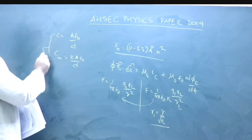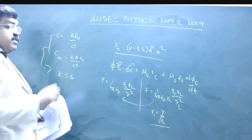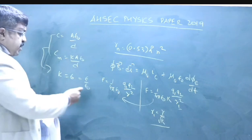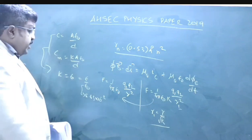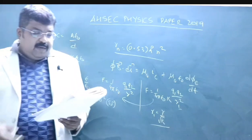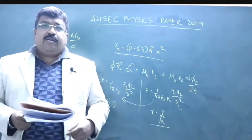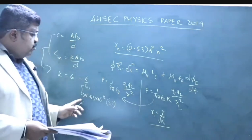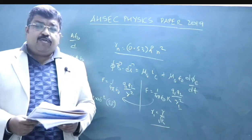Capacitance in free space is epsilon naught A by d, and in medium it is k epsilon naught A by d. If I divide these two quantities I get the value of k to be equal to 6. k is epsilon by epsilon naught, so epsilon is 8.85 times 10 power minus 12 times 6. From that you can get the value of epsilon, and this value comes out to be that of mica, so the material is mica.